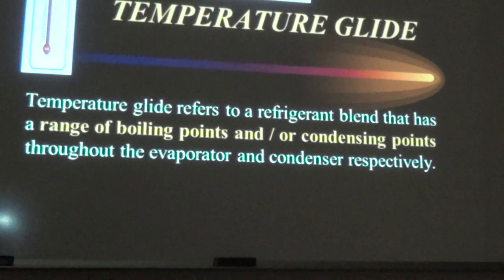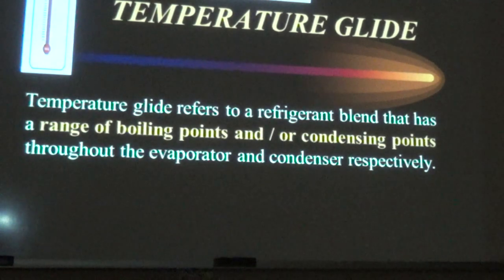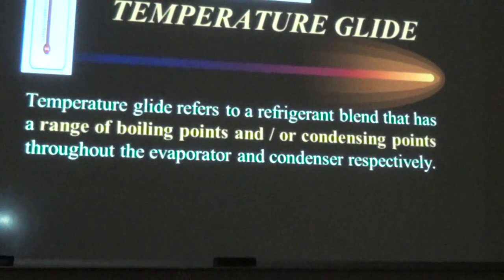Temperature glide refers to refrigerant blends that have a range of boiling points and dew points throughout the evaporator and condenser respectively. You'll be asked to read a pressure-temperature chart; the last page of the study guide handout is a PT chart to bring to the exam.